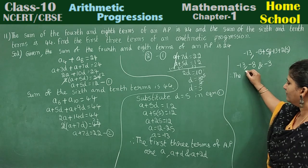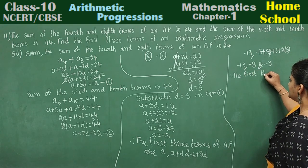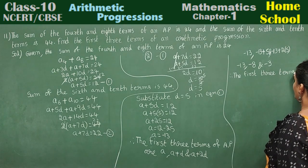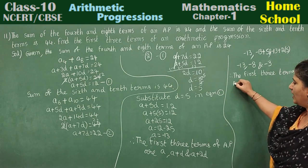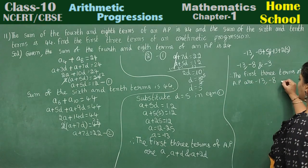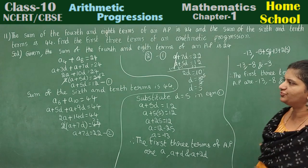Therefore, the first three terms of arithmetic progression are minus 13, minus 8, and minus 3.